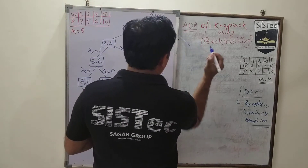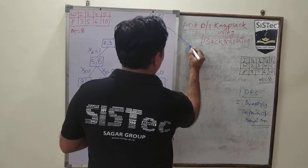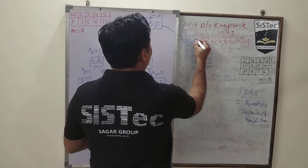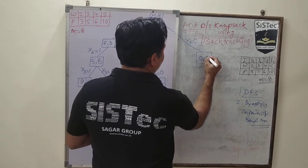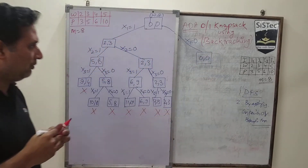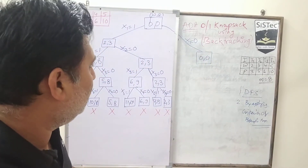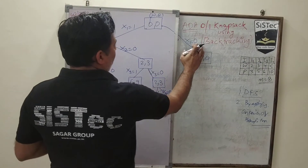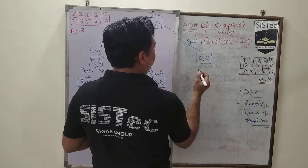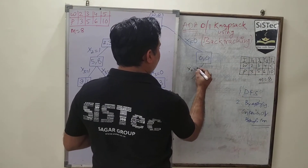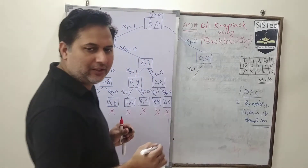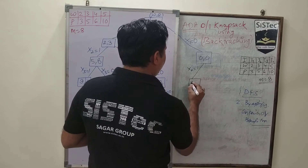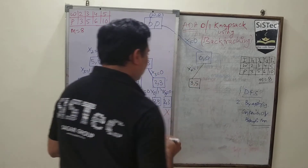Now we are not considering weight 1. We will have 0 weight and 0 profit. After discarding the first weight, we will consider the 2nd weight. When we consider the 2nd weight, the weight value is 3 and profit value is 5.